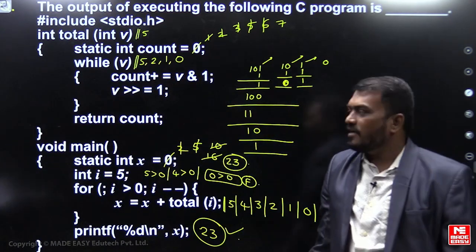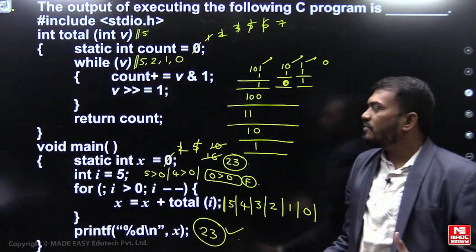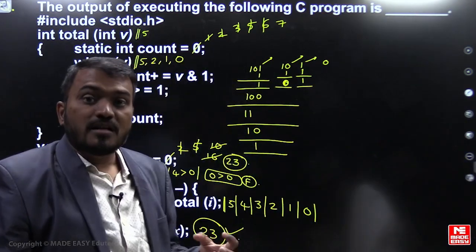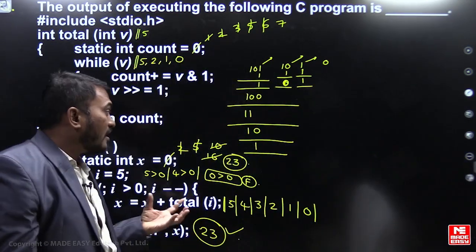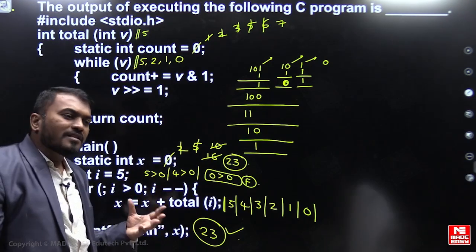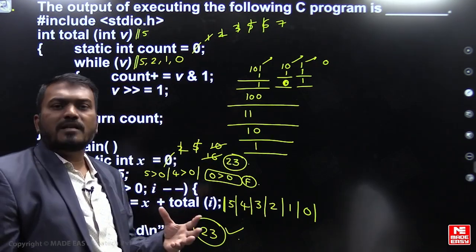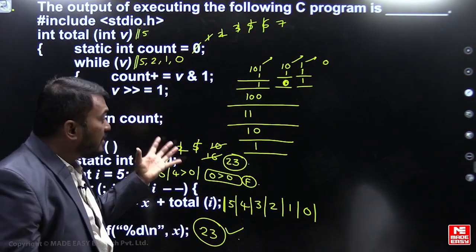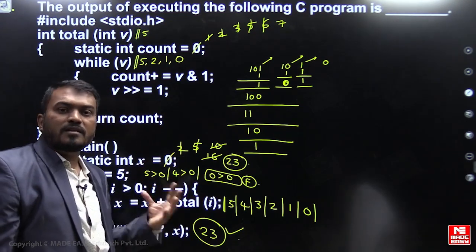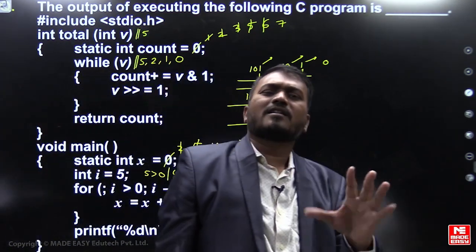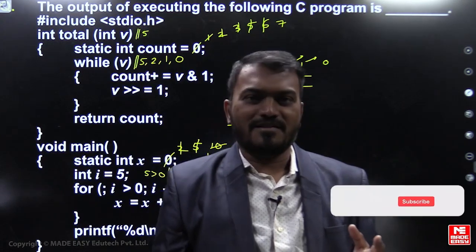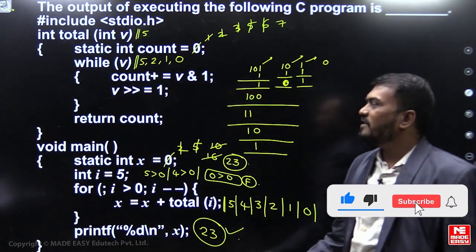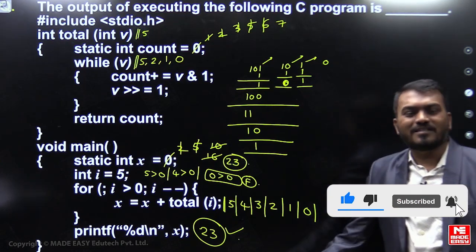This is how you solve this kind of question. In an exam, you have maximum two to three minutes, so understand the behavior of the function first and then execute the remaining iterations accordingly. The right answer for this particular question is 23.